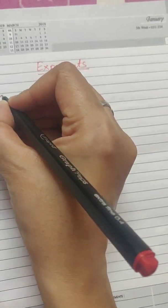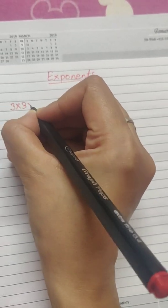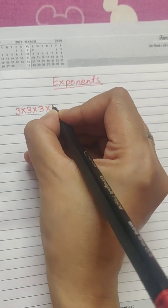Let us first do a quick revision of what exponents are. When a number is multiplied by itself several times, there is another way of writing it. Suppose I am multiplying 3 into 3 into 3 into 3, 5 times.